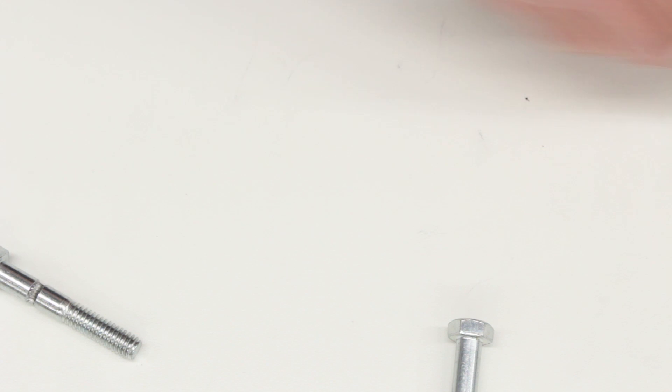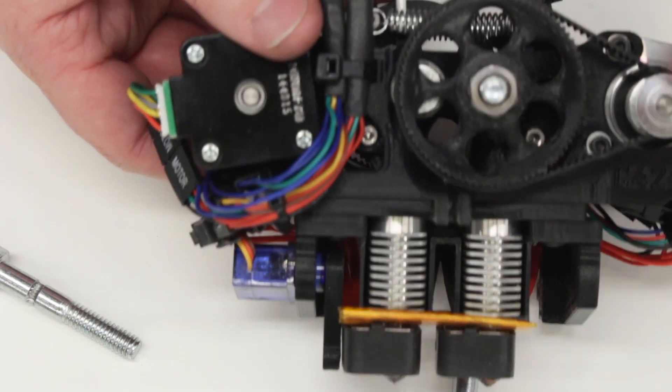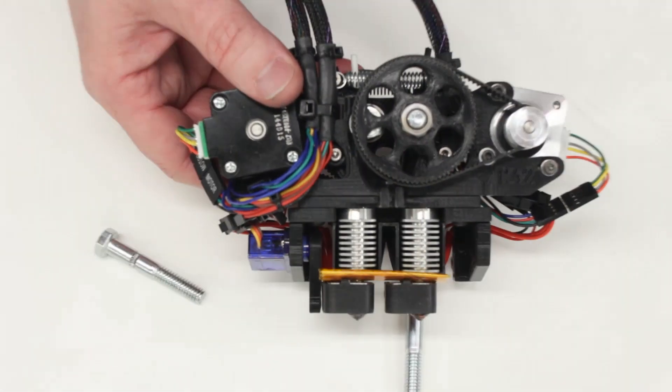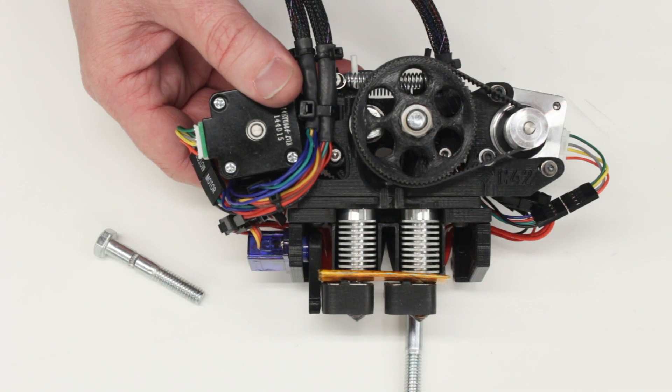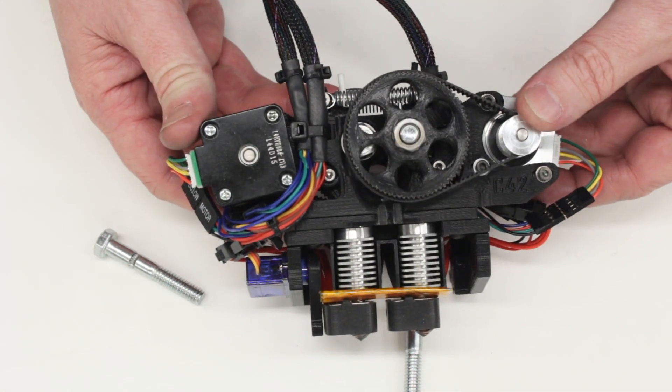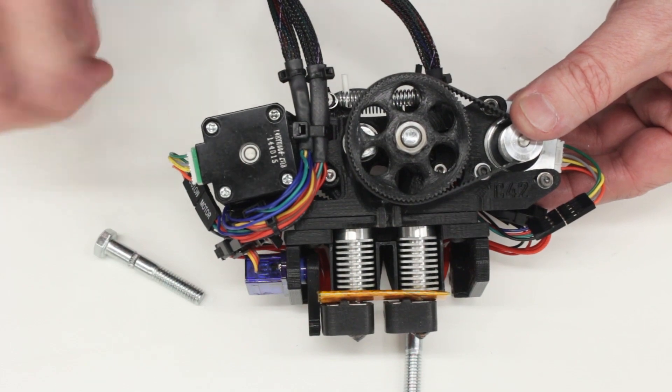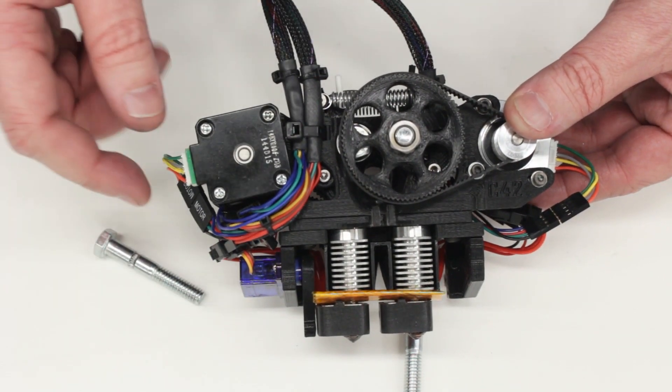So here's an example. As an example, this is a 3D printer extruder. This is one of our designs here at Cloud 42. This is a double extruder.